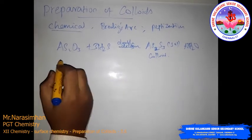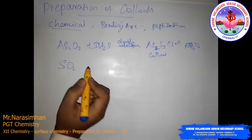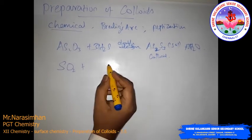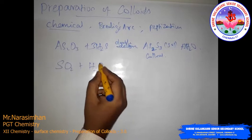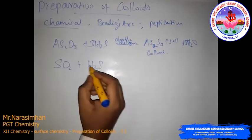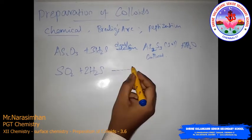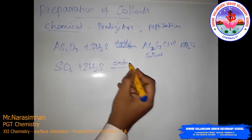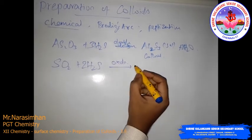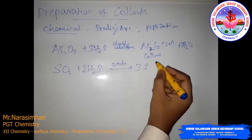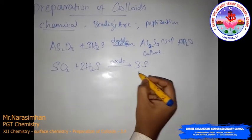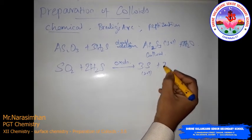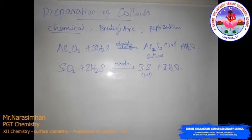The second example: SO2 (sulfur dioxide) undergoes oxidation using hydrogen sulfide gas. Two molecules of hydrogen sulfide gas undergo the oxidation process to obtain three molecules of sulfide salt. This is a colloid, along with water molecules.